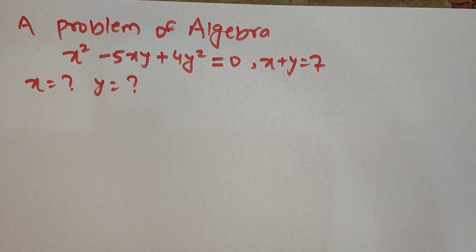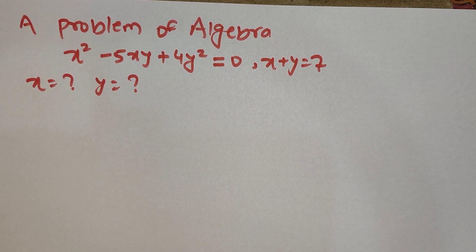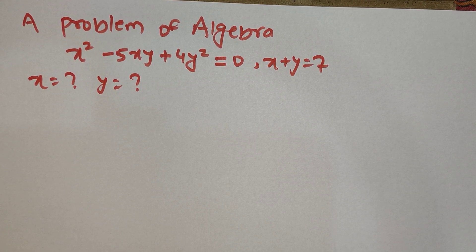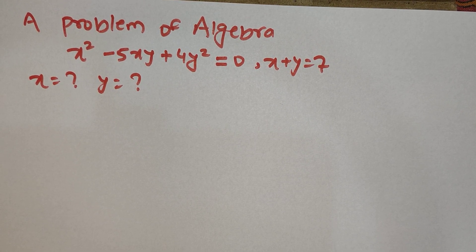Hello everyone, welcome to the new video. Today I have a new equation for you. The question is x² minus 5 times x times y plus 4 times y² equals 0, and another condition is x plus y equals 7. We have to find the value of x and y from this equation. So let's get into the question and find the solution.